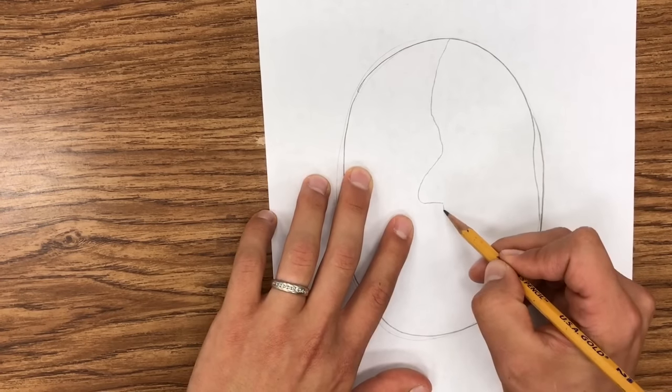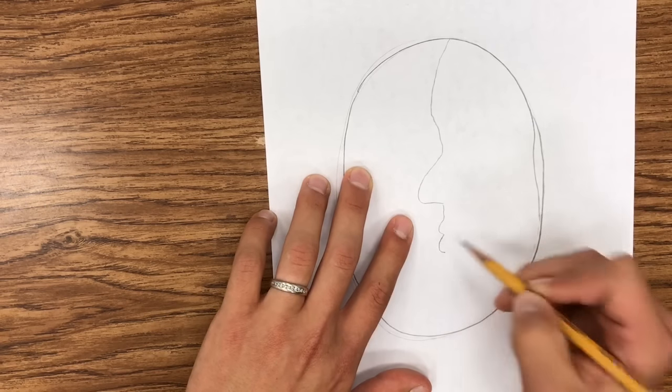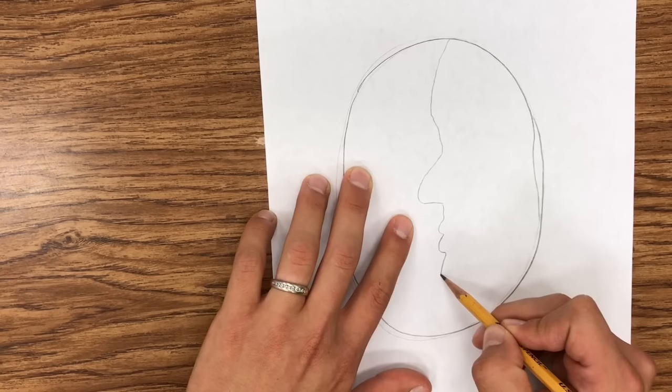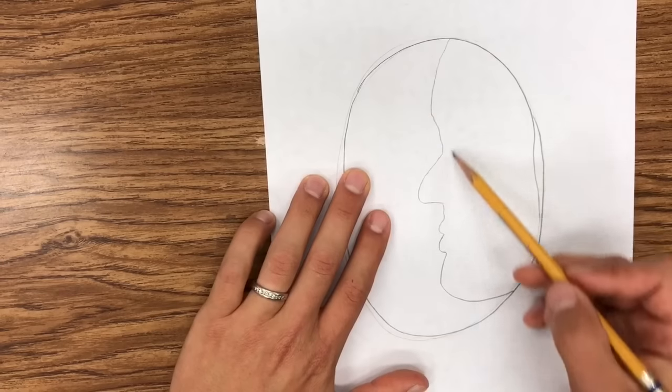And then that nose kind of sharply turns back in, and then it goes a little straight, and then it kind of does like a backwards three for your lips, and then kind of your chin pokes out a little bit and then dumps back in. So that would kind of be a profile.